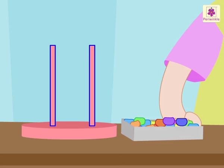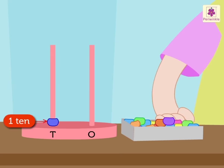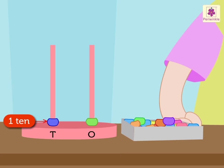The abacus has two rods and many beads. One rod is for tens and the other is for ones. Each bead in the tens rod represents one ten and each bead in the ones rod represents one one.